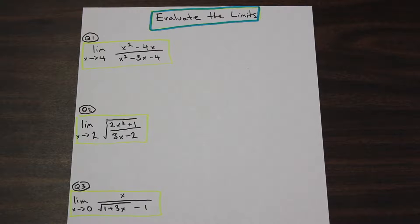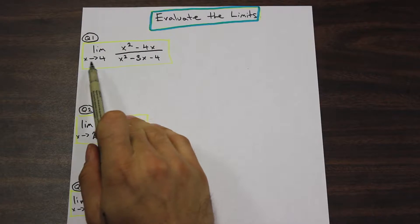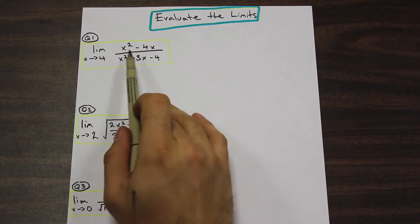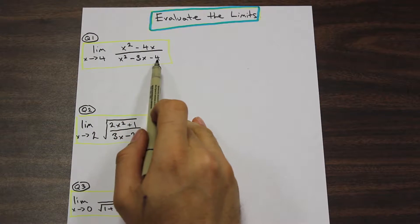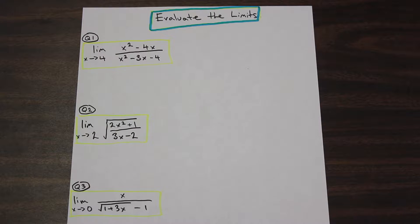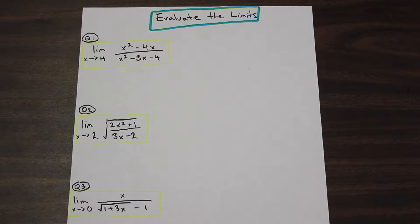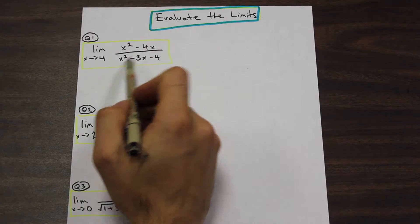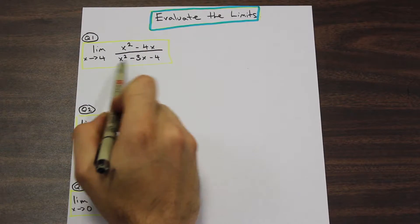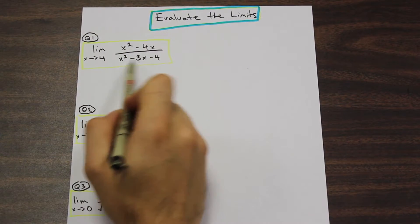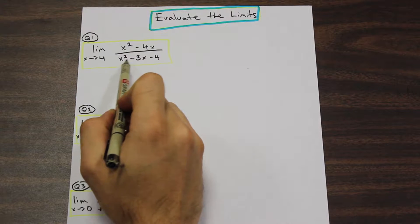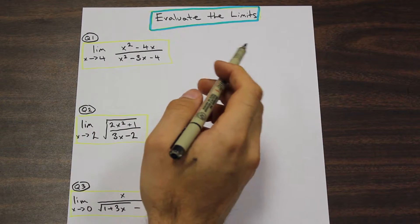Let's get right into question one. We have the limit as x approaches four of x squared minus four x over x squared minus three x minus four. The first thing we check is whether the limit is defined for the input value of four. Looking at the denominator, if we plug four in directly, we get 16 minus 12 minus four, which equals zero — so we're dividing by zero.